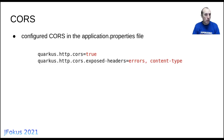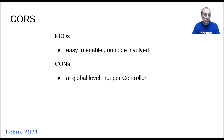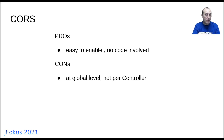For CORS, it's a matter of adding two properties in the properties file and CORS is enabled. The only drawback is that with Spring you can configure CORS at the controller level, but with Quarkus I didn't find a way to do this at the controller level, so it's configured globally.